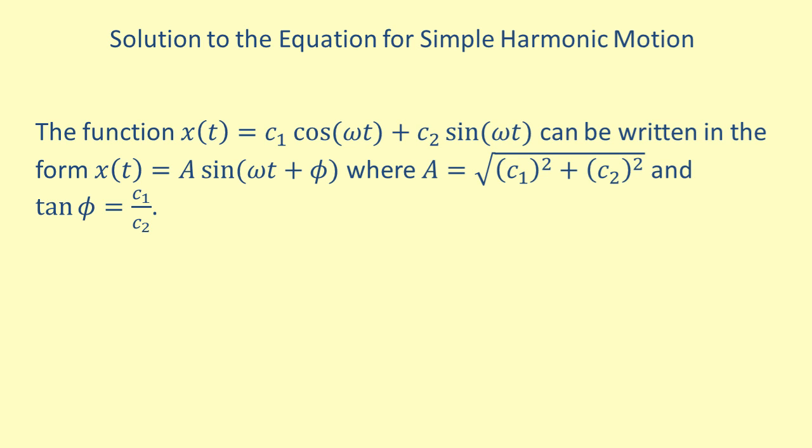When finding solutions to simple harmonic equations, we can write the general solution in a couple different ways. Usually it is seen as x of t equals c1 times cosine omega t plus c2 times sine omega t. It is possible to convert this equation into one with a single term.